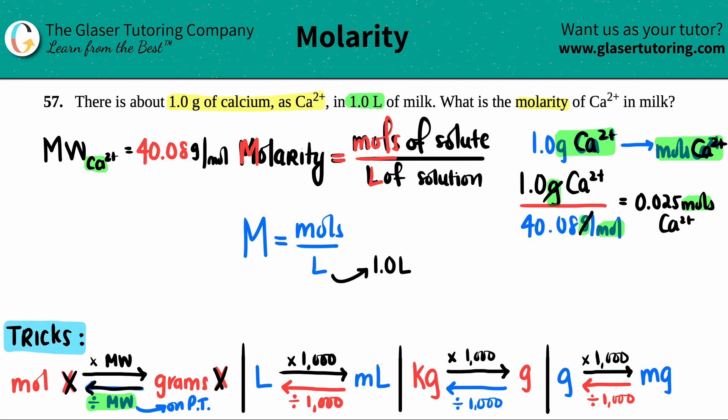Now I have 0.025 moles. I figured it out. Mole divided by liter is molarity, and they were asking for molarity. So molarity equals 0.025 moles divided by 1.0 liter.